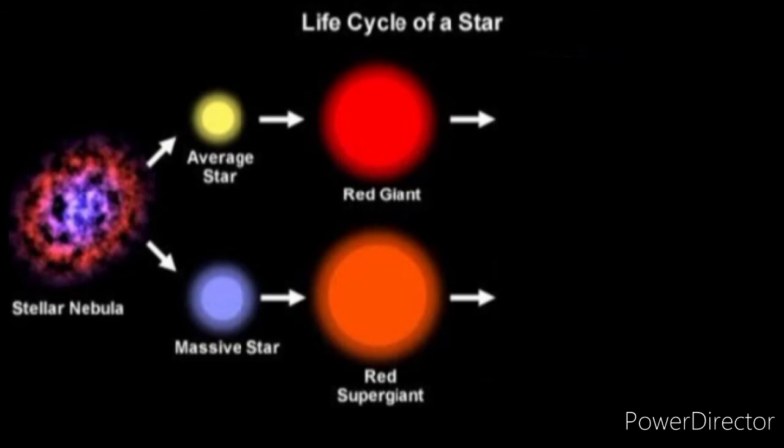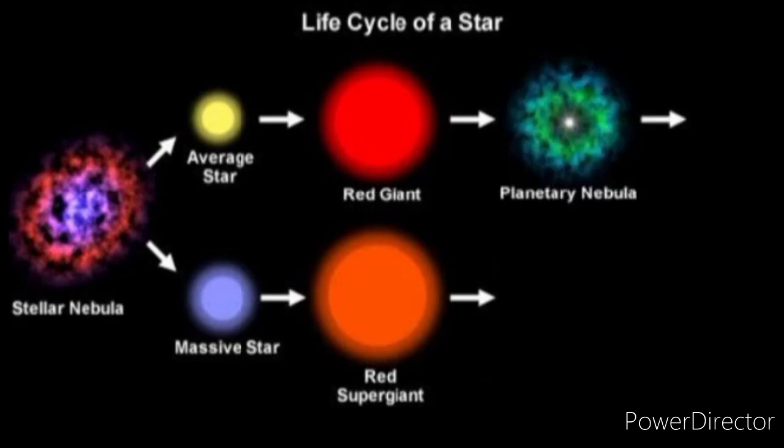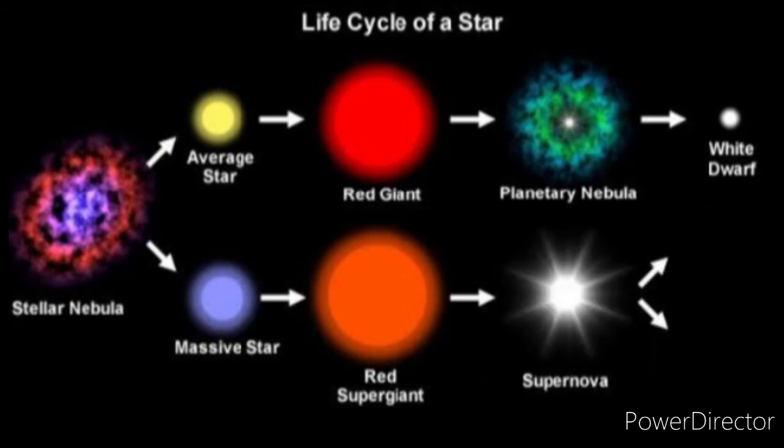Red giants will have a peaceful death, passing through a planetary nebula to become a white dwarf. The white dwarf cools down, stops glowing, and technically becomes a black dwarf. On the other hand, red supergiants will have a much more energetic end — an incredibly huge explosion called a supernova.